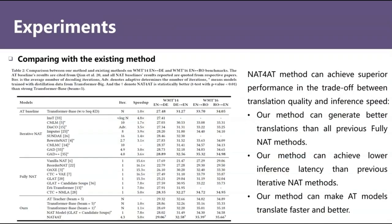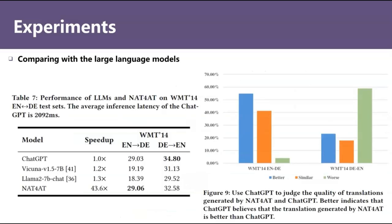We compare our method with existing methods. As we can see in Table 2, NAT for AT can achieve superior performance in the trade-off between translation quality and inference speed. Furthermore, we compared our method with large language models, including open source and commercial models. As we can see, NAT for AT outperforms open source LLMs in both translation quality and inference speed. Even compared to ChatGPT, NAT for AT still retains certain advantages.